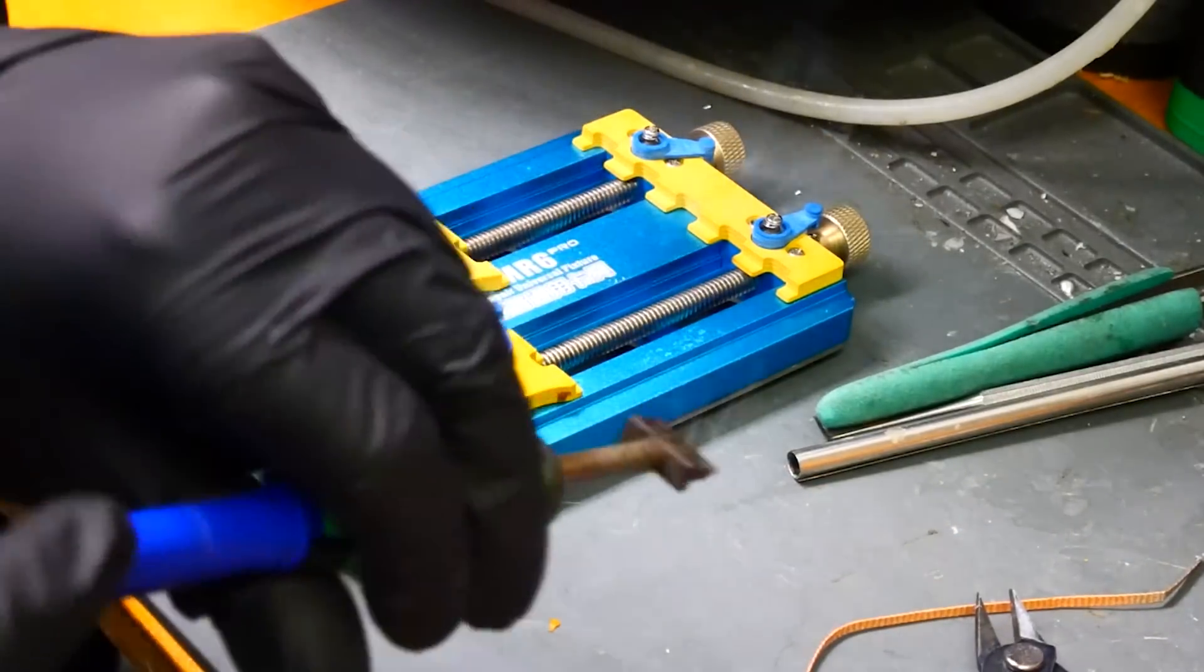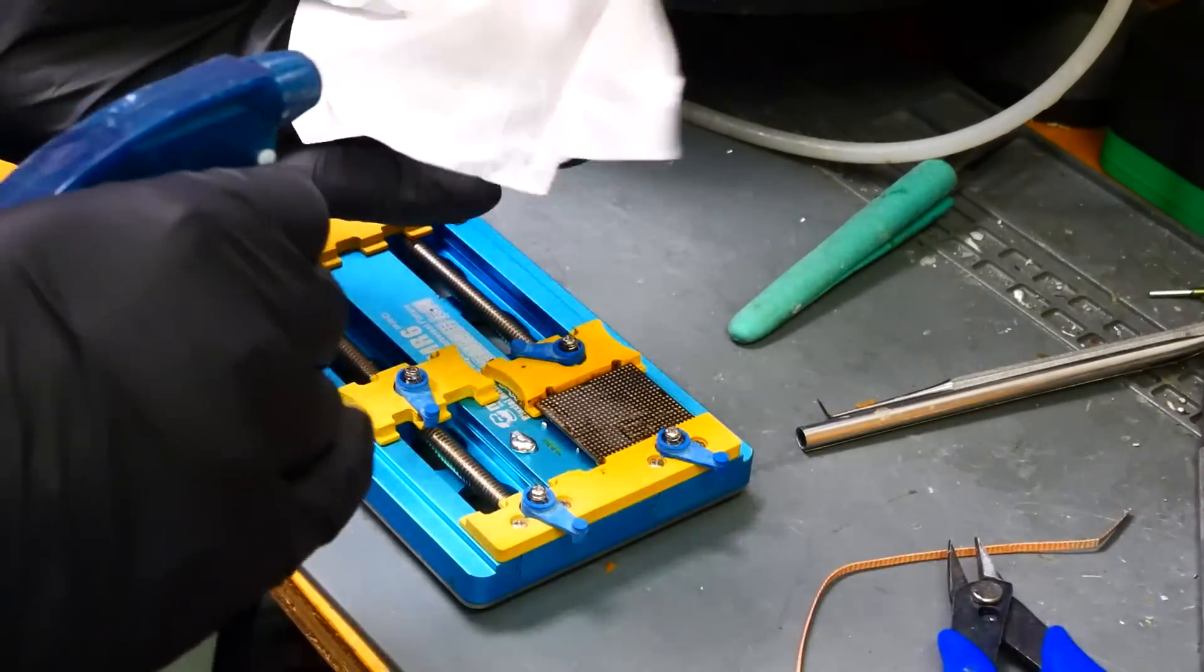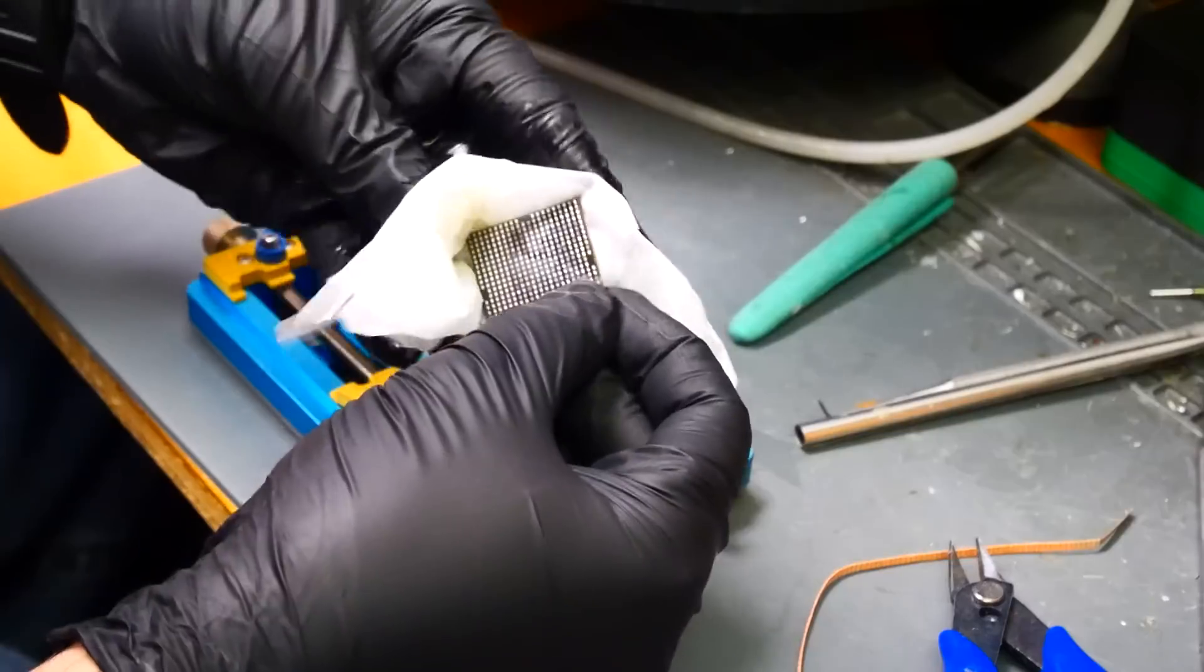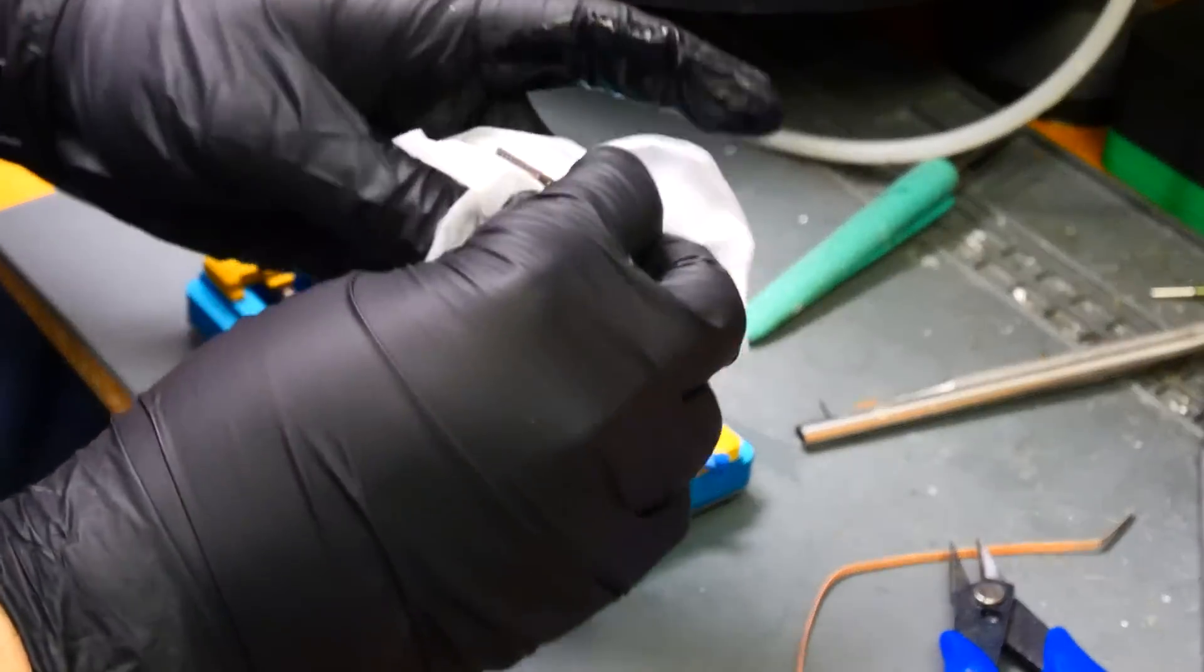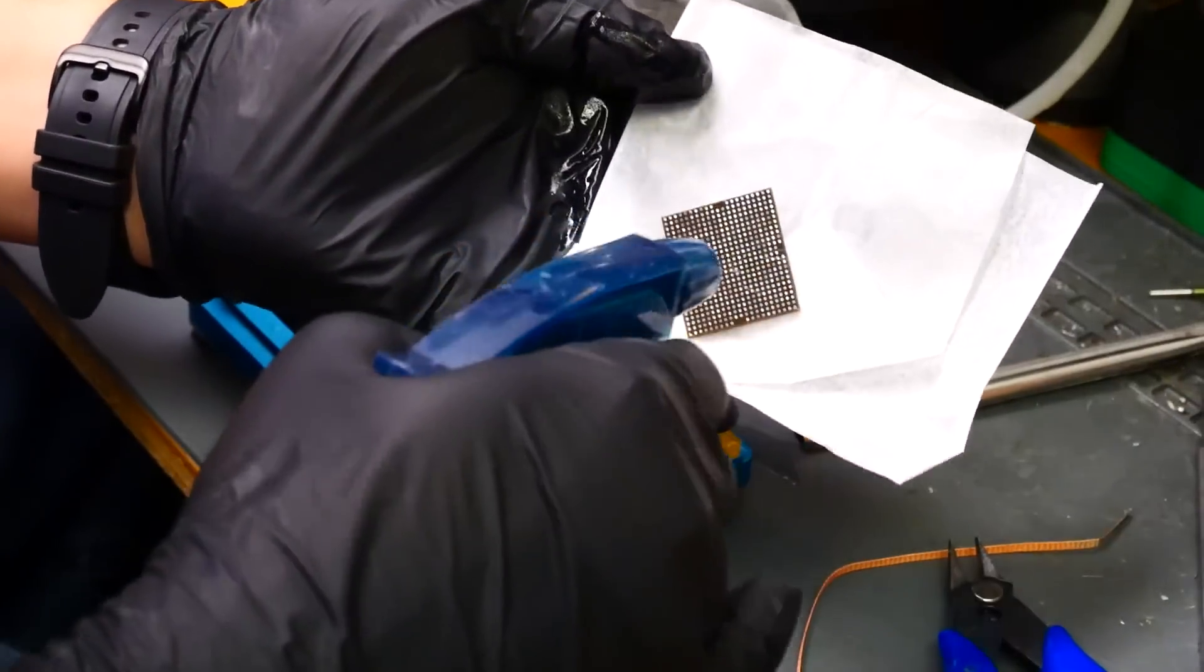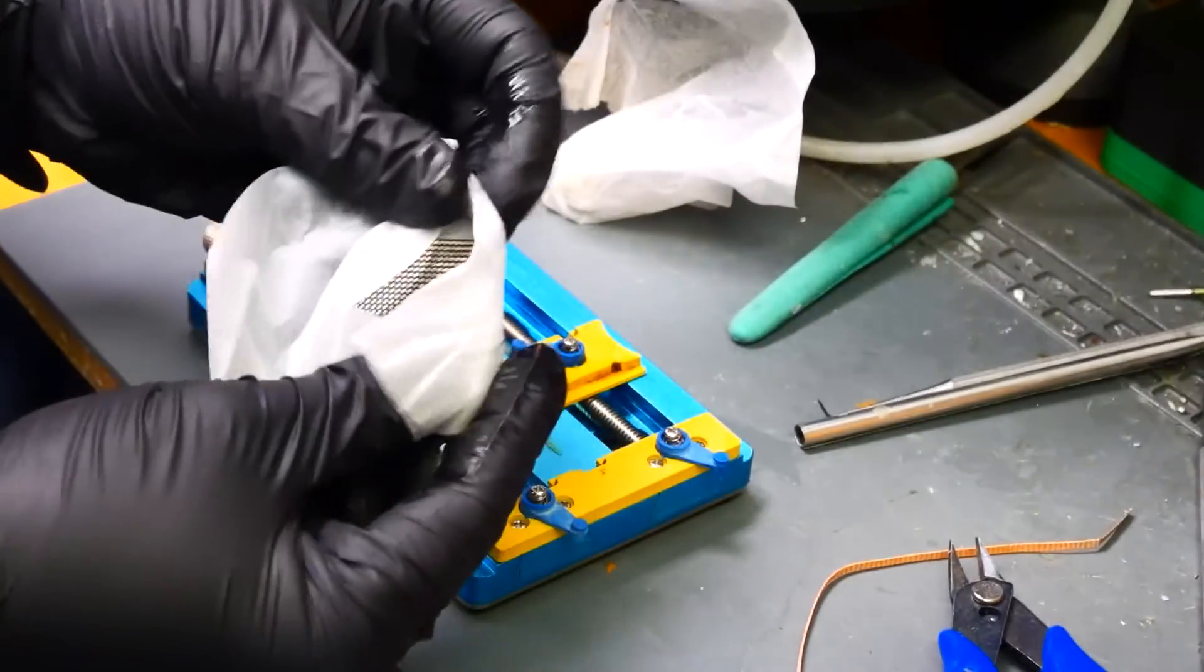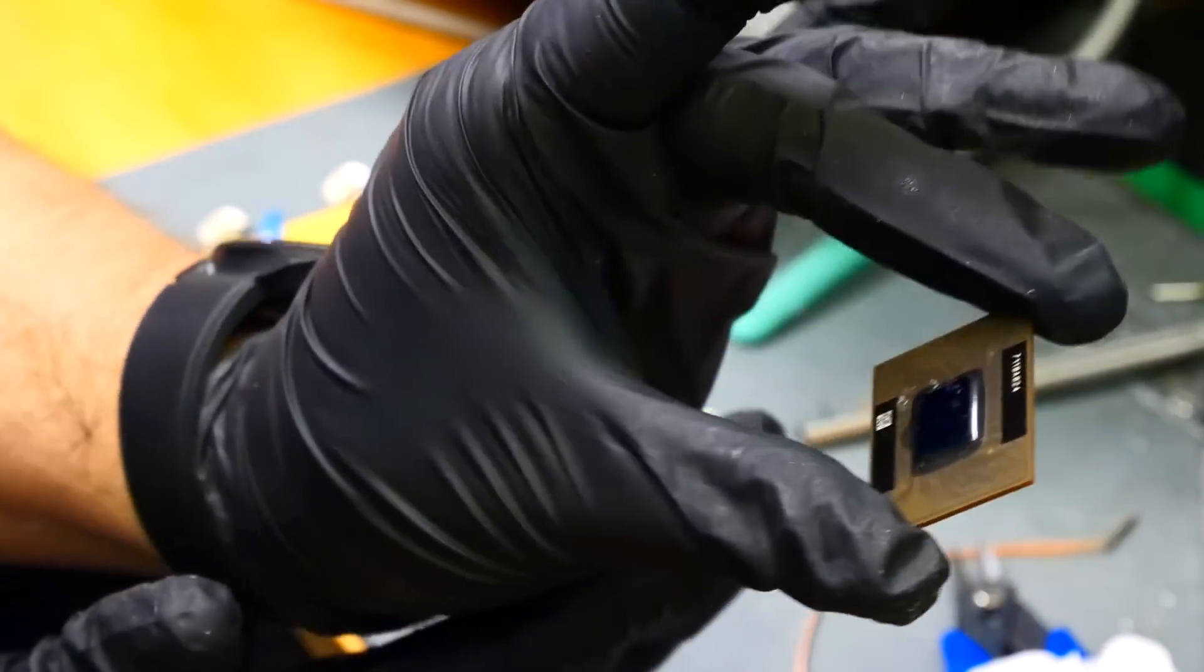That looks pretty clean. We'll clean up the spent flux with some alcohol and some Kim Tech wipes. And it looks like we're ready for the reball process. It's nice and clean.